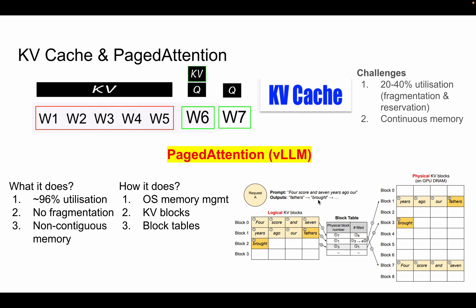When the block is full and a new token like 'brought' is generated, a request goes to the memory manager, which allocates a new block. Only the first slot of that new block is filled with the new token, and the remaining three slots are left blank — so that as the LLM generates new tokens, it has space to fill them in.